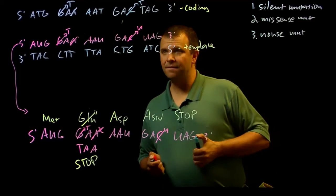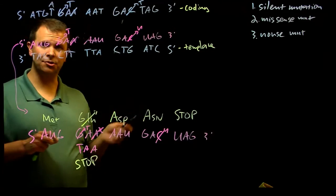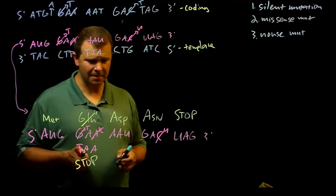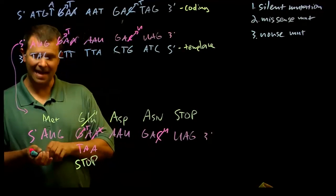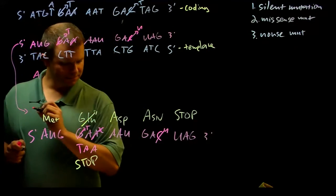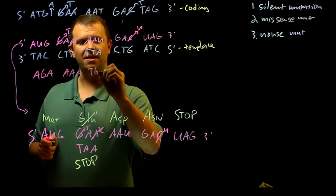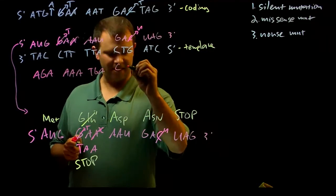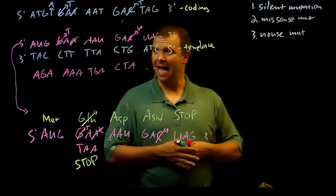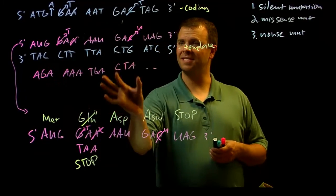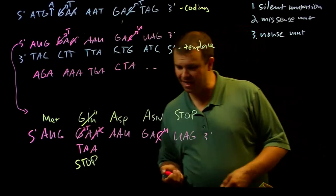Finally, if after this ATG I went ahead and inserted an extra A, which actually isn't terribly uncommon, now instead of this set of codons, I have a different set of codons: AGA, AAA, TGA, CTA, etc. And you can see how these codons are significantly different than the codons that I started with.